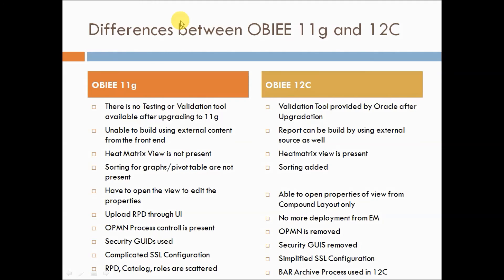SSL configuration is simplified in 12c. In 11g, the RPD file, catalog, and roles are all separate — roles are present in WebLogic or the EM console. In 12c, they have introduced a BAR archive file to move from one environment to another. This BAR archive file contains the RPD, catalog, and roles together, making it easy to move between environments.